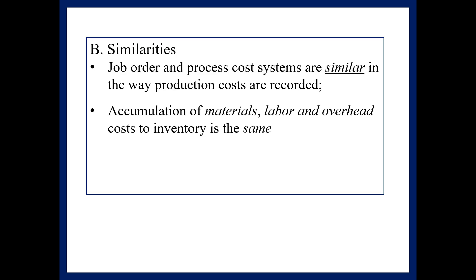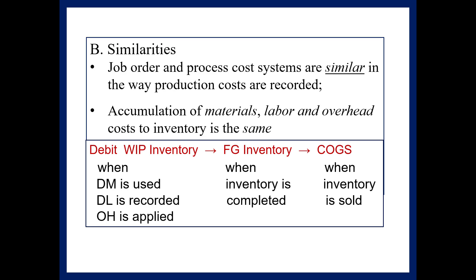Similarities between job order and process costing: they are very similar in how production costs are recorded on the books. Materials, labor, and overhead are assigned in a very similar fashion. We debit work in process inventory when direct material is used, direct labor is recorded, or overhead is applied. These costs transfer to finished goods inventory when goods are completed, and to cost of goods sold when inventory is sold — and this continues to hold true in process costing.